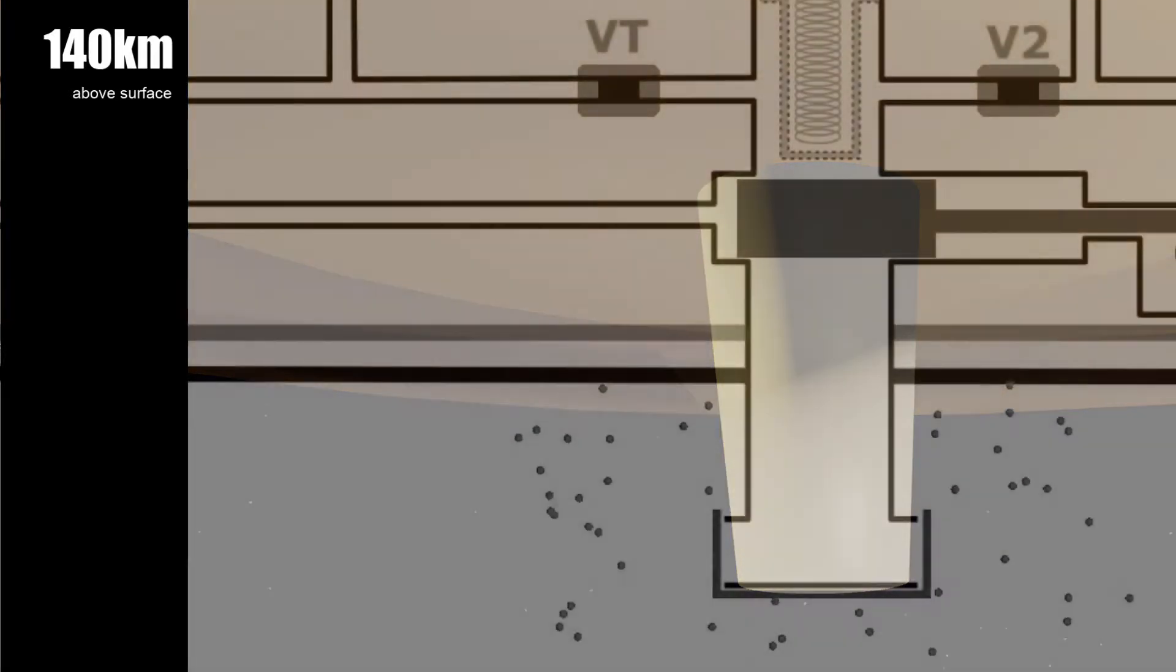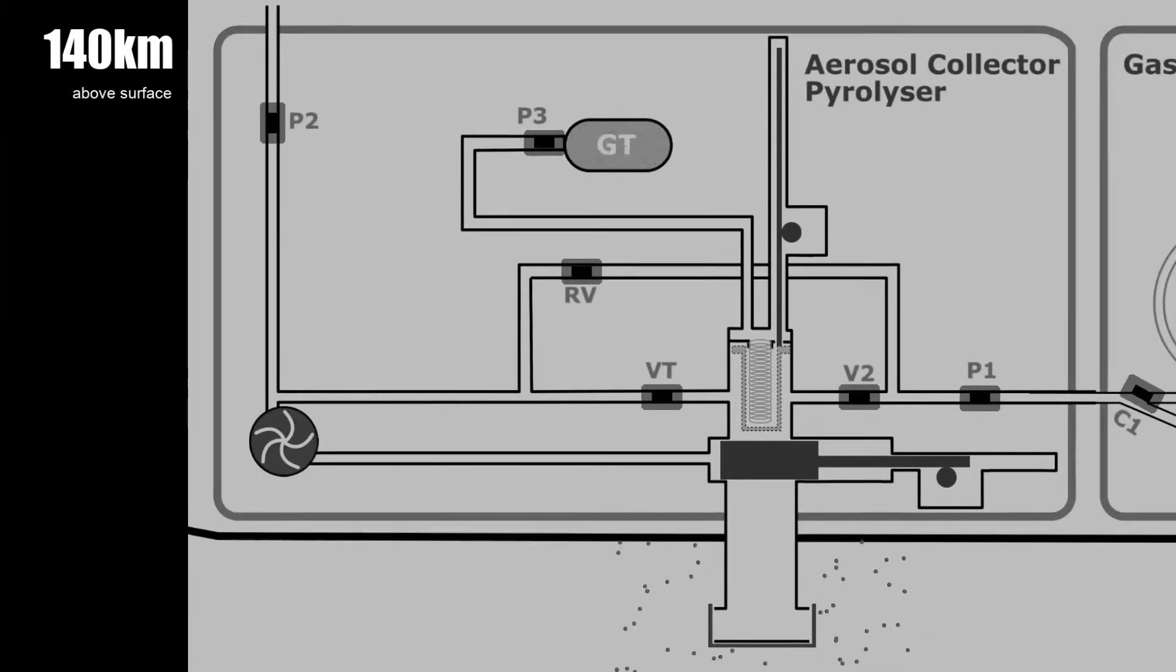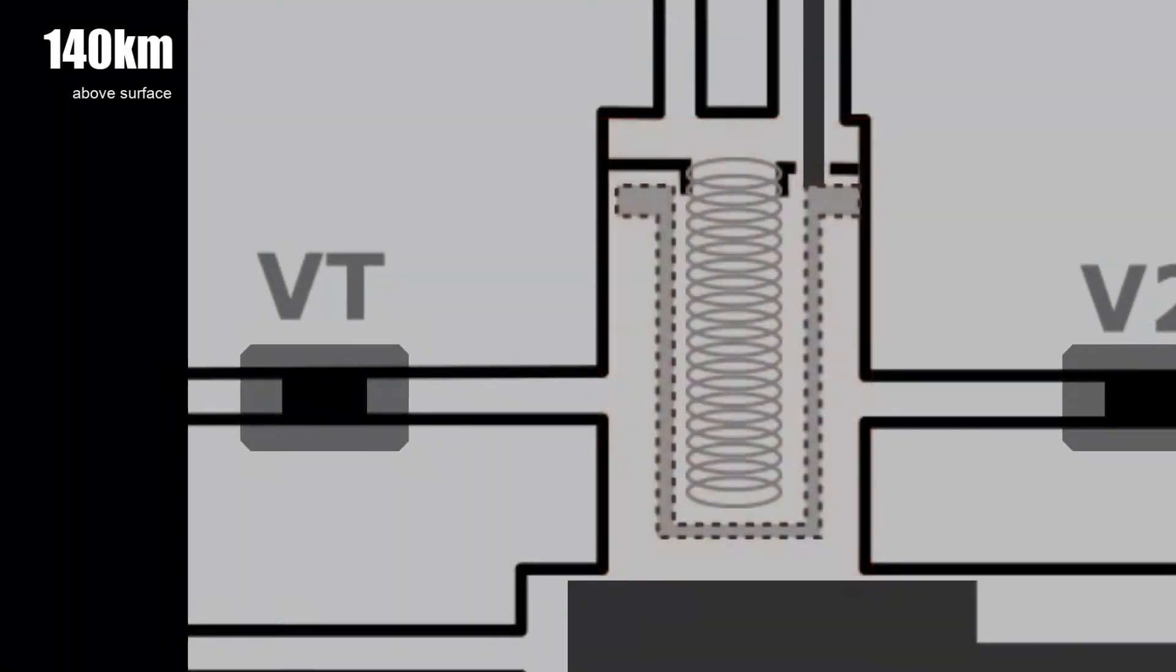This is the internal workings of the ACP. The heart of the system is the oven. It is here that the aerosol we collect during the descent through Titan's atmosphere is heated.